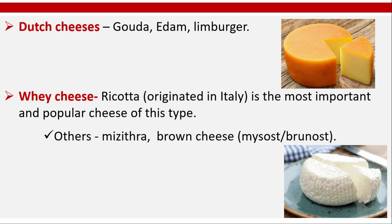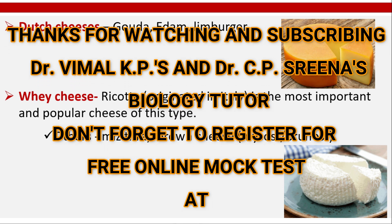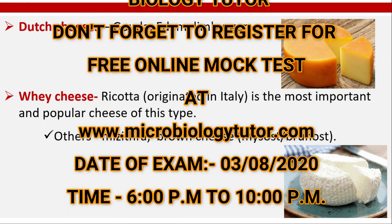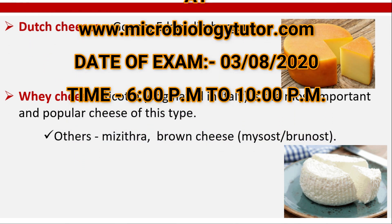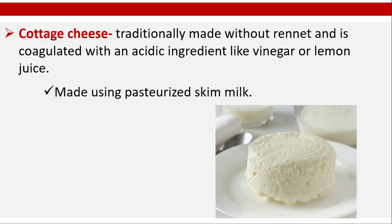Dutch cheeses: Gouda, Edam, and Limburger are Dutch cheeses. Whey cheese: Ricotta, originated in Italy, is the most important and popular cheese of this type. Others include Mizithra, Brown cheese, Mysost or Brunost. Cottage cheese is traditionally made without rennet and is coagulated with an acid ingredient like vinegar or lemon juice, using pasteurized skim milk.